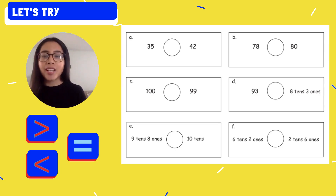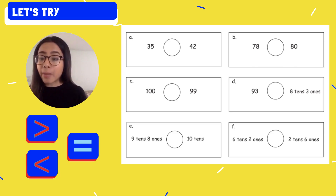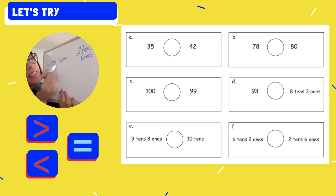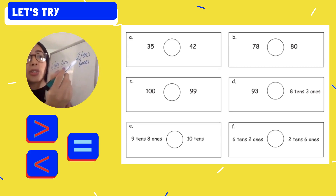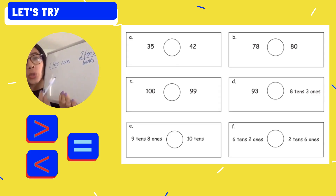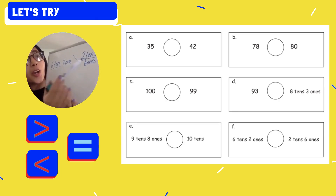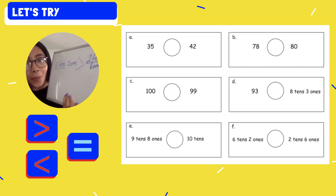And now our last one. We have six tens and two ones, and two tens and six ones. Six groups of ten is bigger or greater than two tens. So I'm going to use my greater than symbol. Six tens and two ones is greater than two tens and six ones.